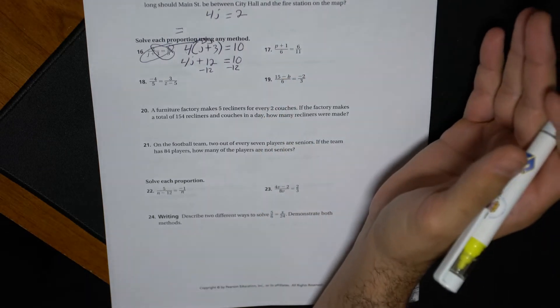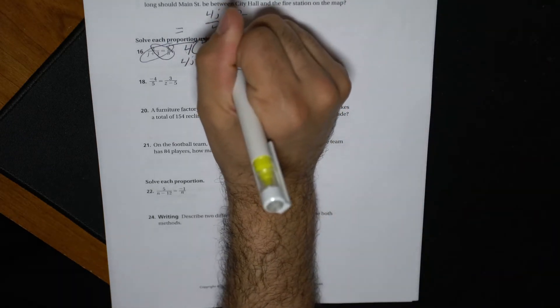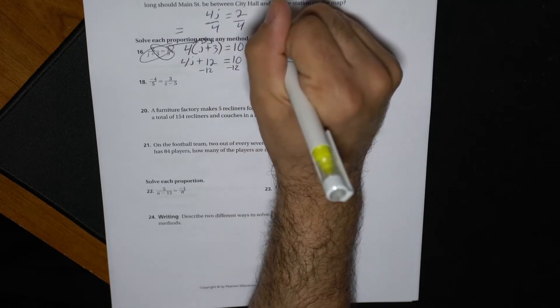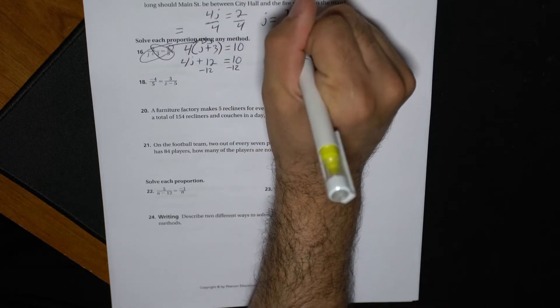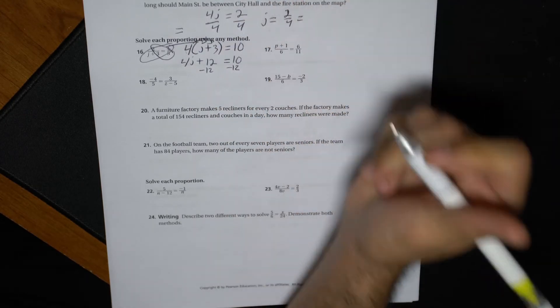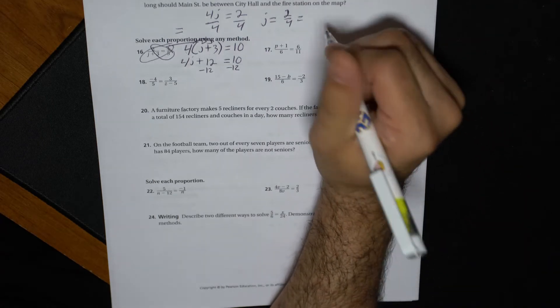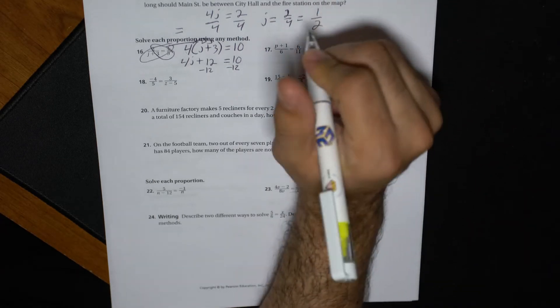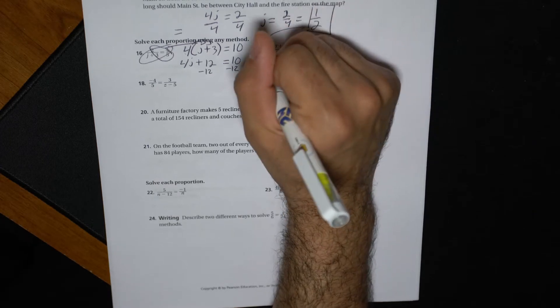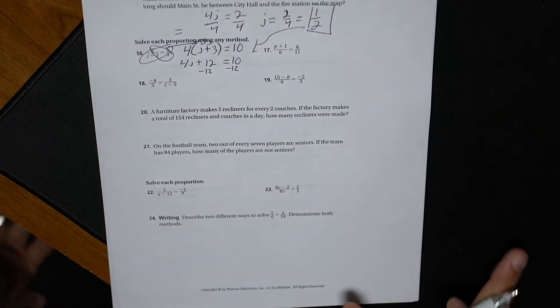I'm going to solve for j. Well, that means I'm going to divide both sides by four. And j is going to have to equal two over four, but I want to simplify. I want to reduce. So this is going to be one over two. And that's going to be my answer for number 16.